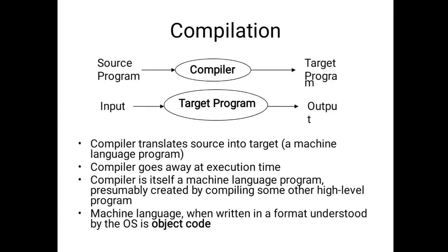The source program is converted by the compiler to a target program. You give input values, the CPU processes the logical statements, and you get some output. The compiler translates the source into the target machine language program, and then the compiler's job is finished at execution time. This is the process to get your output — the job done by the compiler is called compilation.